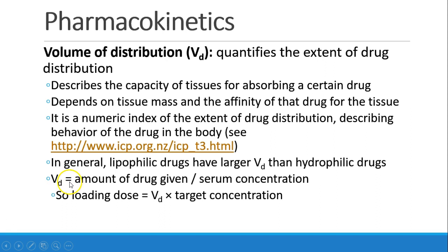Again, we can calculate volume of distribution by looking at amount of drug given divided by the serum concentration. And so, if you wanted to calculate a loading dose, you would just take the known volume of distribution and multiply it by your target concentration.